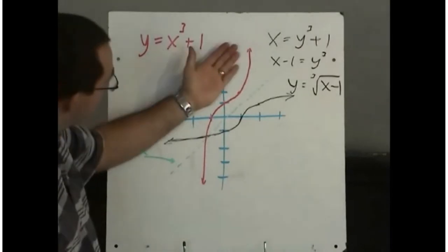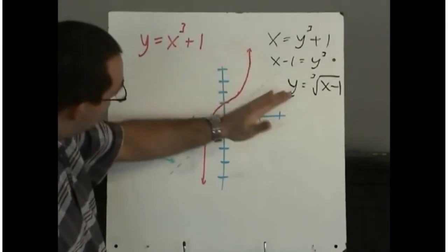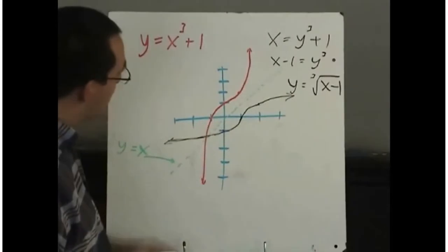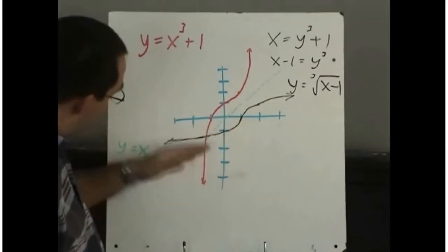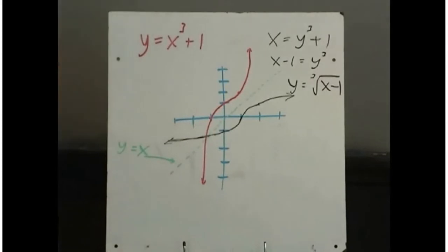So I think you can maybe see it here now. Now if you take this red graph and flip it over that green line, it would actually fall right on top of the black line.